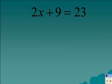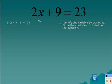The first thing that we'll do is identify the variable by boxing it. We can see that the variable is x. Next, we're going to circle the coefficient. The coefficient is always going to be the number that's multiplied by the variable.